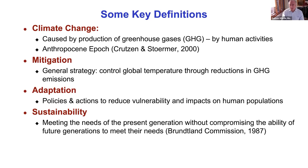Mitigation in the context of climate change refers to a general strategy to control global temperatures through reduction in greenhouse gas emissions — that is the main purpose of mitigation. In contrast, adaptation refers to all the many policies and actions to reduce vulnerability and impacts on human populations at all scales, from very local to very global. Sustainability, a term introduced in 1987 by the Brundtland Commission, talks about meeting the needs of the present generation without compromising the ability of future generations to meet their needs.